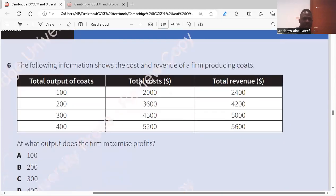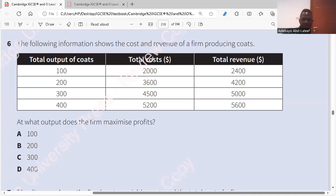Question six. Which of the following information shows the cost and revenue of a firm using output? At what output does the firm maximize profit? Profit maximization. Total revenue minus total cost. So it's 400. 400? 500, 600. Five, six, 500, 400. No, no, no. It's 600. It's 200. Total cost is 3,600 and the total revenue is 4,200. So the profit is 600. That's the most one. Yeah, 400, 600. It's 200.